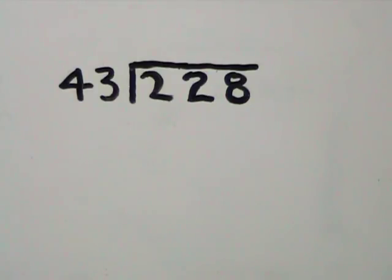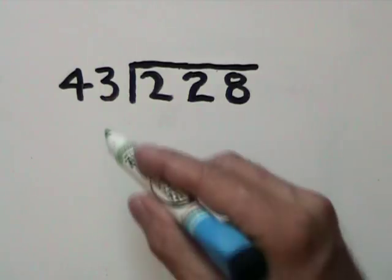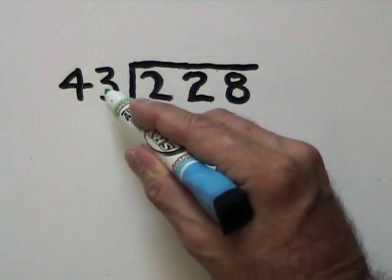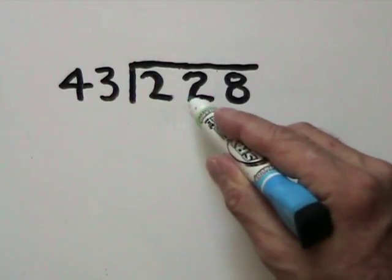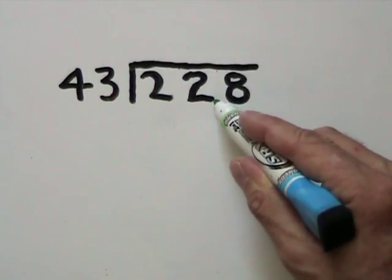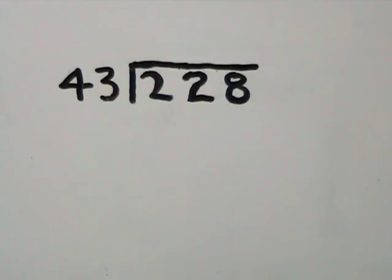When this happens, we use compatible numbers to get an estimate for our quotient. In other words, the 43 will be rounded to 40. The 228 will be rounded to 200. We ask ourselves, how many times does 40 go into 200? It goes in 5 times. That 5 will be used as an estimate to see if it will work as our quotient.